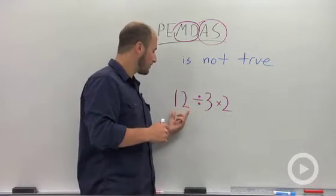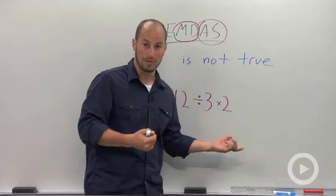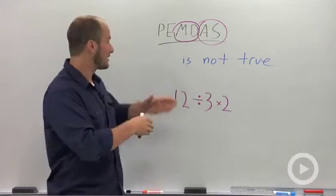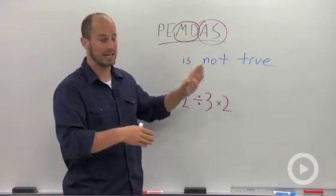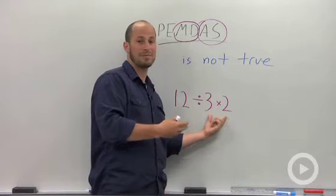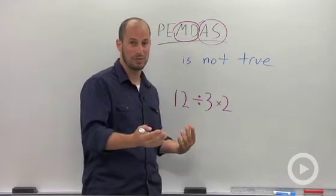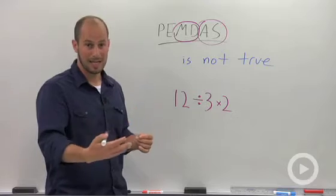So for here, we have 12 divided by 3 times 2. PEMDAS would tell us to multiply before dividing. So what we would do is we'd multiply our 3 times 2, get 6, 12 divided by 6 is 2. So if you use PEMDAS, you would get 2.